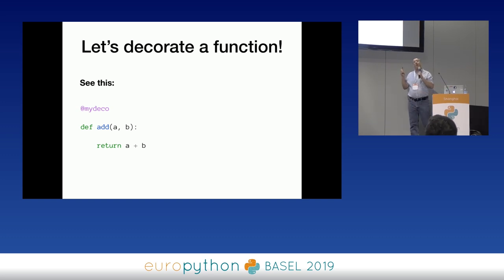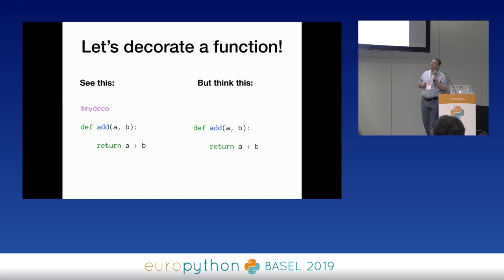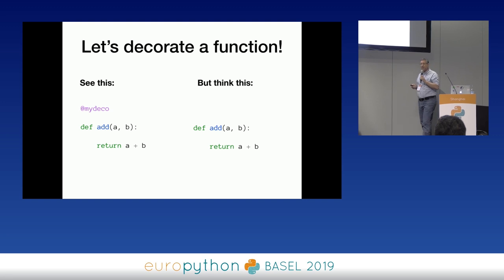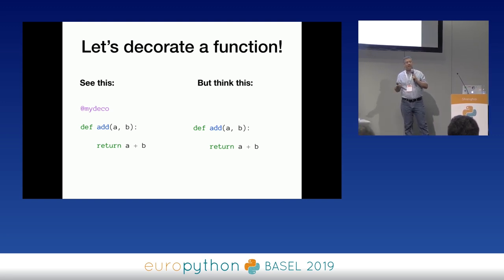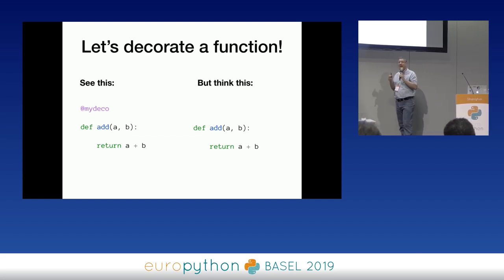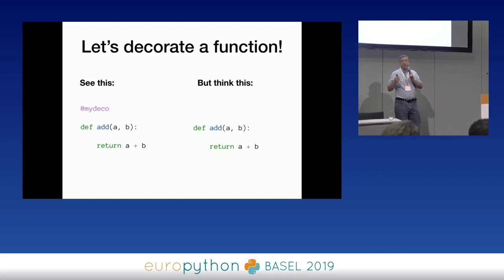What's important is to understand what's going on here when we decorate this function — the whole process happening in Python behind the scenes. First of all, our function is getting defined. When you say def add(a, b), return a + b, two things are happening: we're creating a new function object, and we're assigning that object to the identifier 'add'.